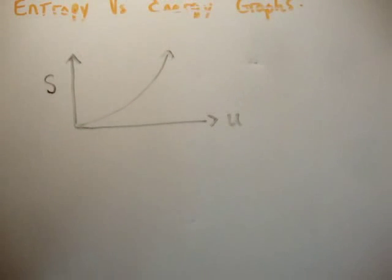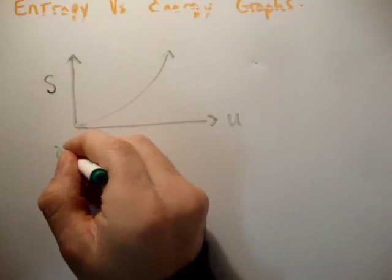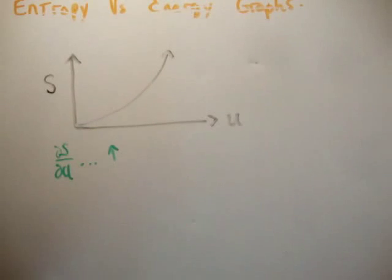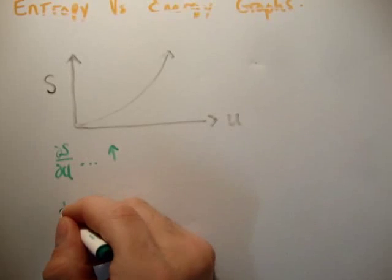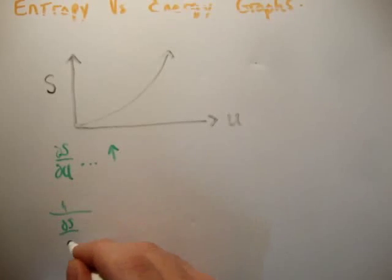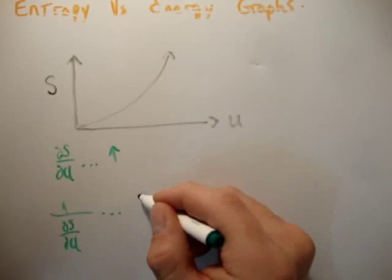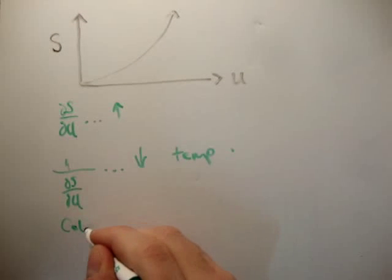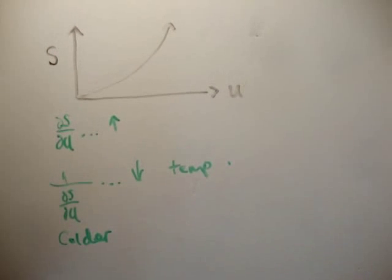Well, if it's concave up, what is getting larger? Well, del S del U is going up. The rate of change of S with respect to U is going up. Therefore, 1 over del S del U, which is the temperature, is going down. So the body is getting colder. So as the energy increases, the body is getting colder.